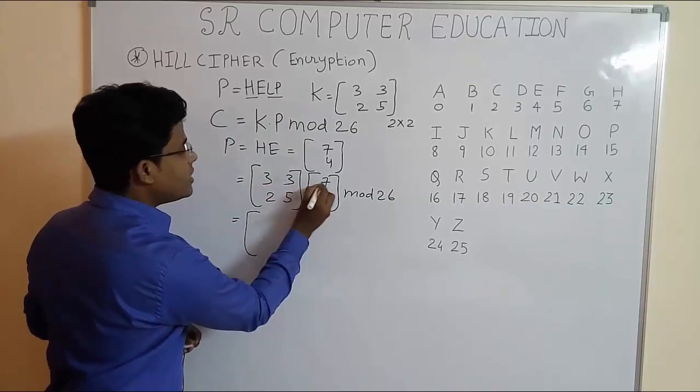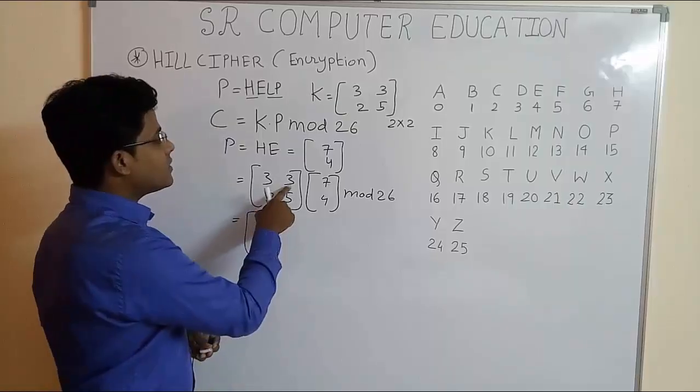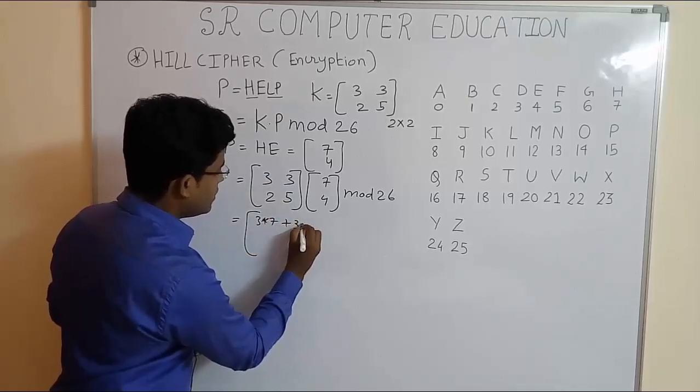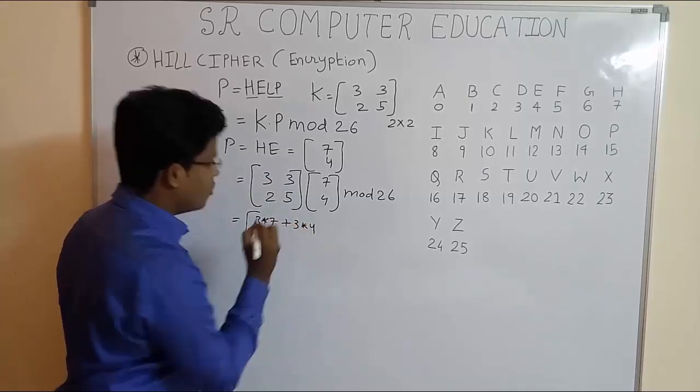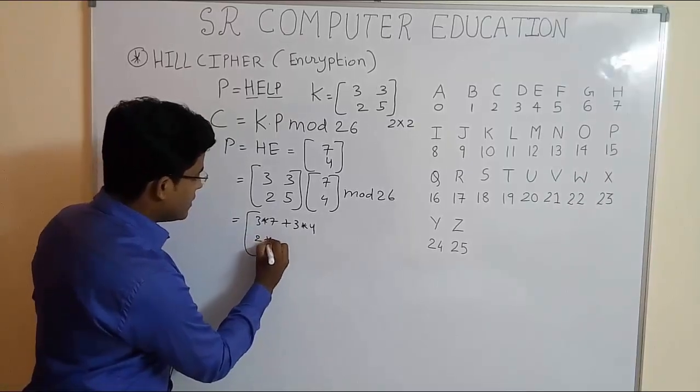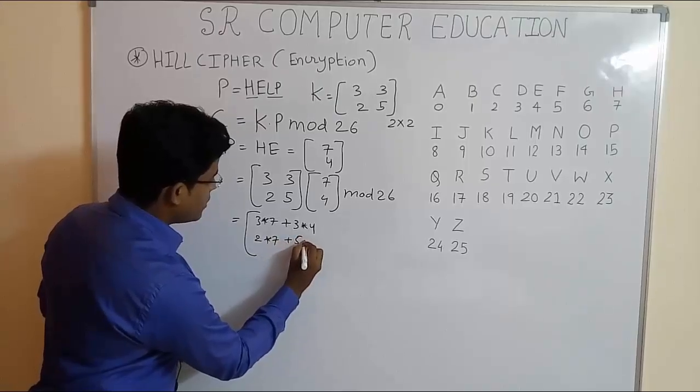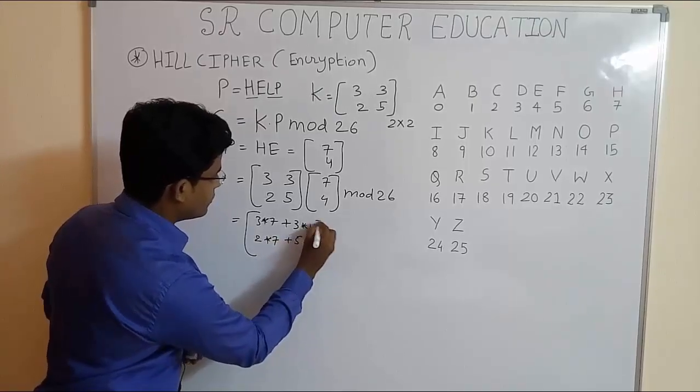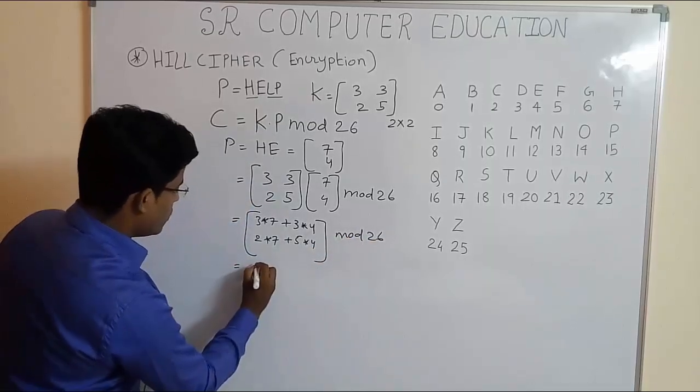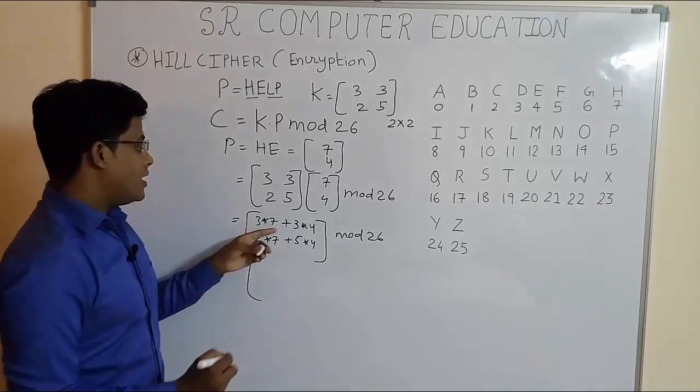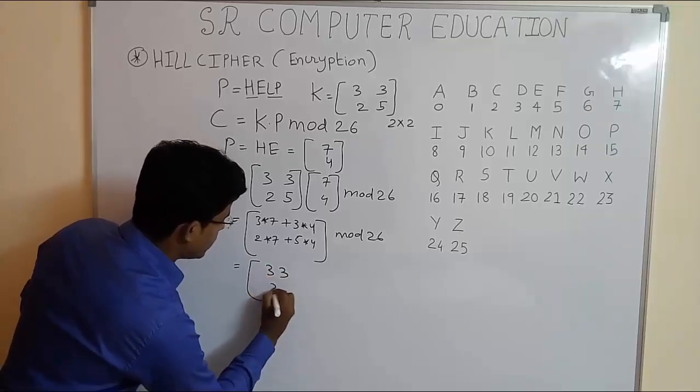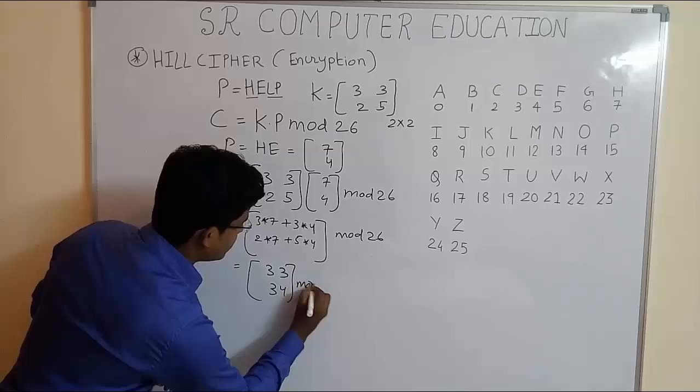So let's do the matrix multiplication. 3 times 7 plus 3 times 4, and the next term is 2 times 7 plus 5 times 4, mod 26. So after multiplication and adding these two numbers we get 33 and 34 mod 26.